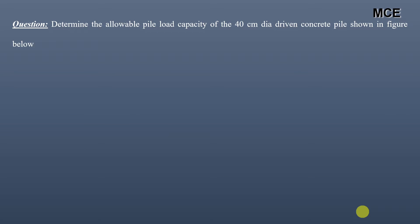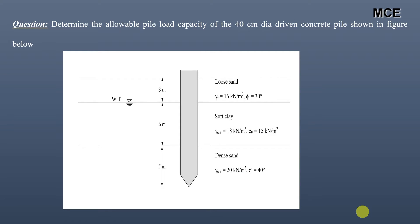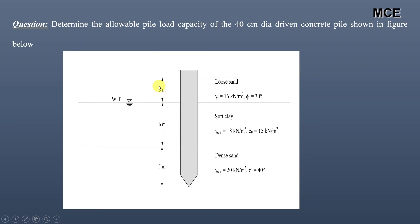Hello and welcome back to Master Civil Engineering. In this video we will learn how to find the pile load capacity when the pile is passing through multiple soil layers. We have been given a question: determine the allowable pile load capacity of a 40 centimeter diameter driven concrete pile. The pile passes through a loose sand, then a soft clay layer, and finally through a dense sand. The water table is at a depth of 3 meters from the ground surface.